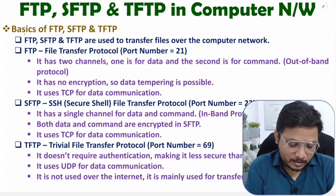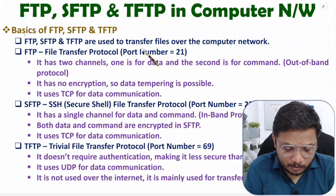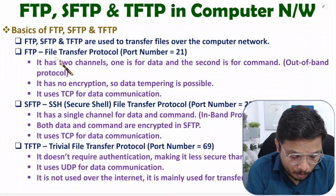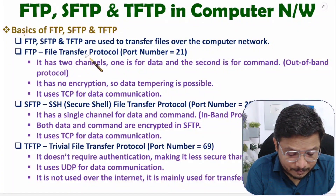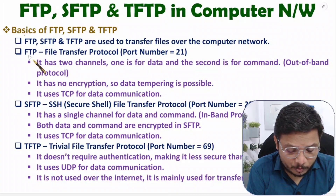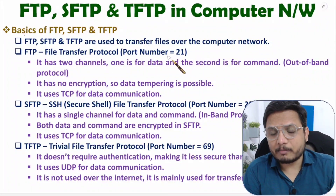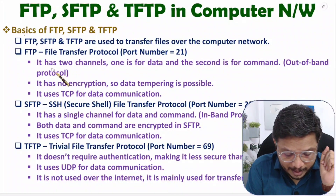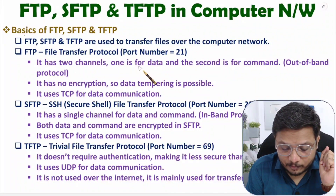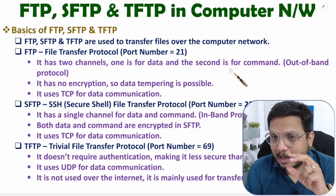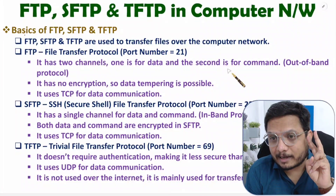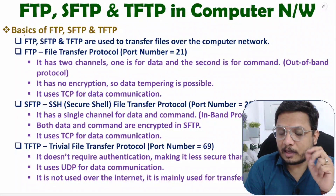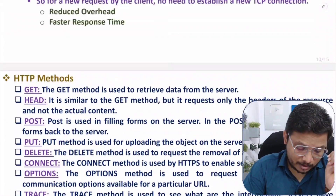All three protocols are used for file transfer in computer networks. When we talk about FTP, the full form is File Transfer Protocol and the port number for FTP is 21. With FTP we have two channels — one channel for data and a second channel for commands. Because there are two separate channels, FTP is referred to as an out-of-band protocol.